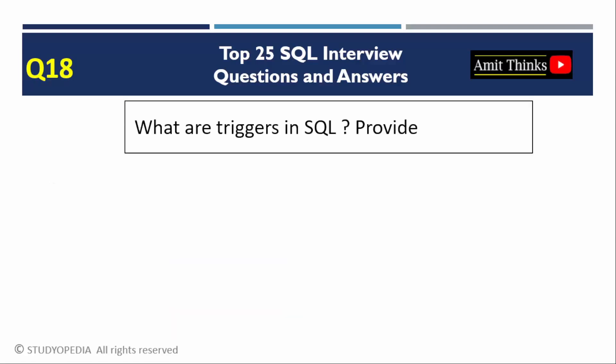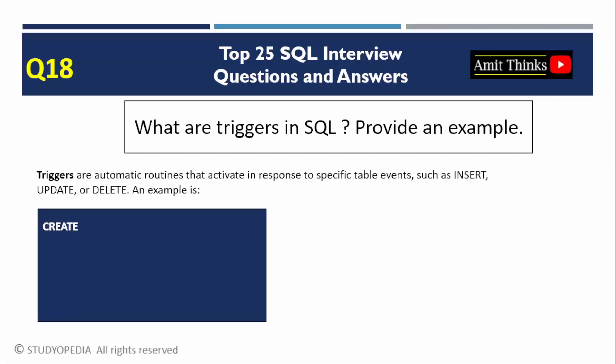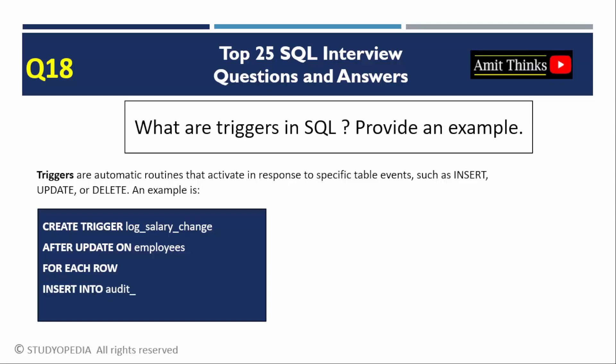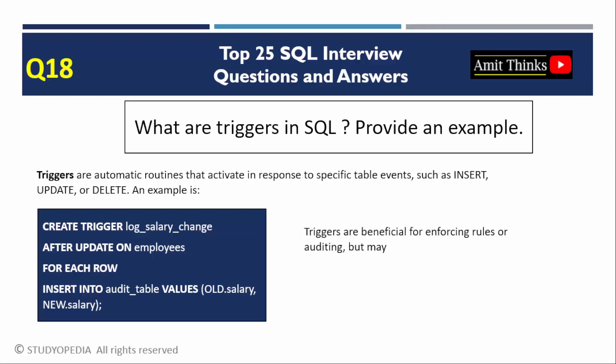Question 18: What are triggers? Triggers are automatic procedures invoked on specific events like INSERT or UPDATE. Here is an example creating a trigger log_salary_change designed to log salary changes in the employees table. The event is AFTER UPDATE — it activates after a row in the employees table is updated. It is a row-level trigger (FOR EACH ROW), running once for every updated row. The action inserts a record into audit_table containing old.salary (before update) and new.salary (after update). Triggers enforce business rules or audit changes but can add overhead and complexity.